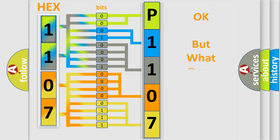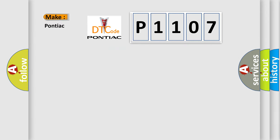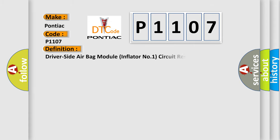We now know in what way the diagnostic tool translates the received information into a more comprehensible format. The number itself does not make sense to us if we cannot assign information about what it actually expresses. So, what does the diagnostic trouble code P1107 interpret specifically for Pontiac car manufacturers? The basic definition is: driver side airbag module inflator number one circuit resistance low.